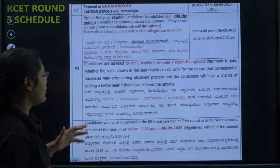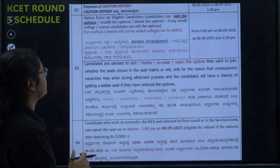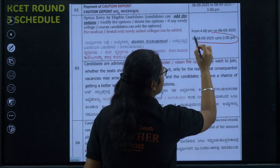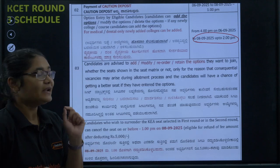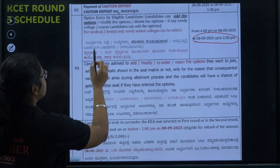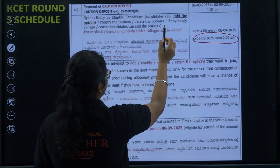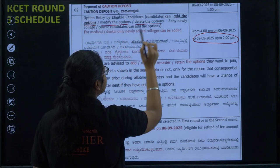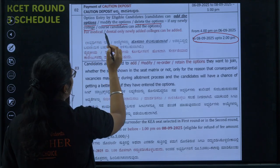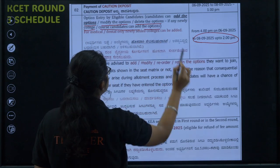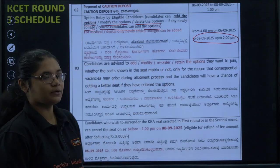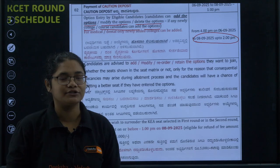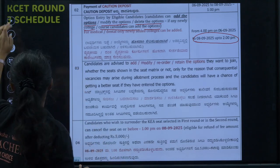Moving forward, the Round 3 schedule is already out. You can modify your option entry till 8th of September, 2 PM. As you can see here, it is clearly written: eligible candidates can add options, modify options, or delete options. If any new college or course is available, candidates can add those options.